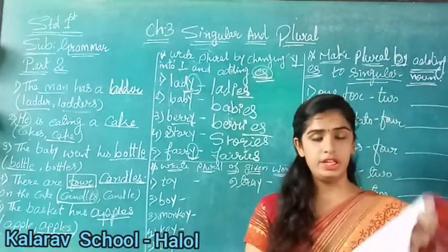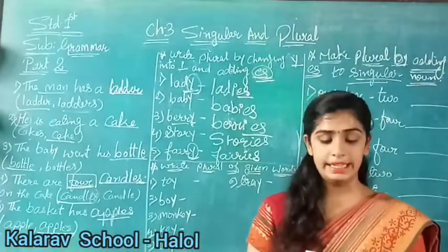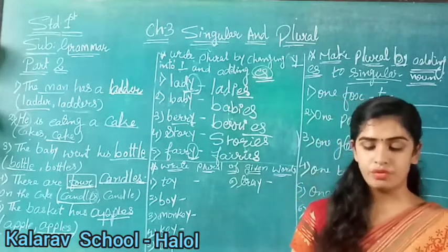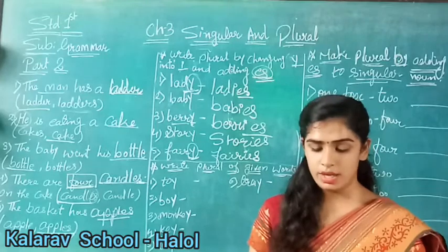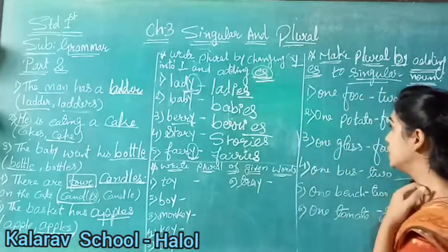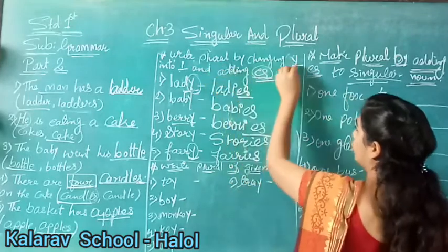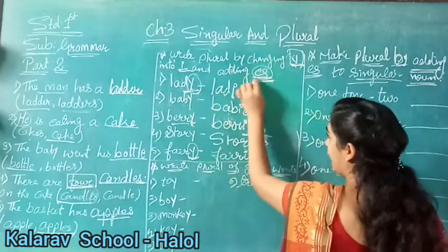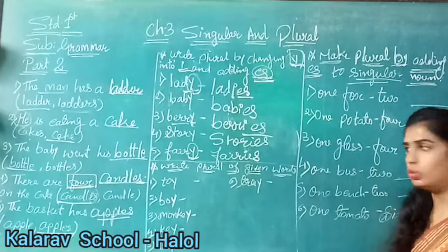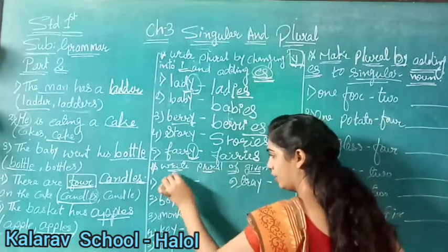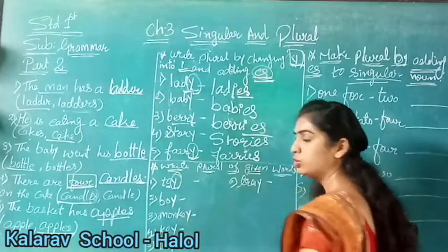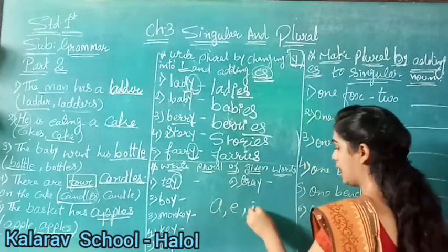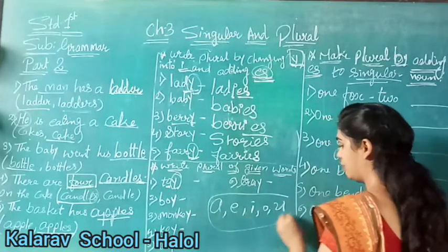Now see page number 15. If the word has a vowel before Y, then only S is added to form the plural. For example: one toy and many toys. What are vowels, children? Vowels are A, E, I, O, and U - these all are our vowels.